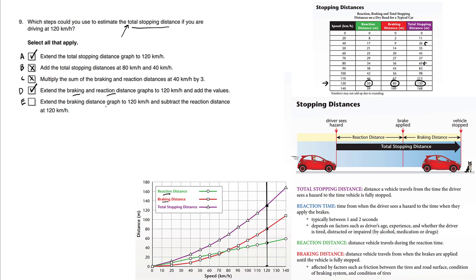Finally, extend the braking distance graph to 120 kilometers an hour and subtract the reaction distance at 120 kilometers an hour. Why would we take the red graph and subtract the green graph? That's the wrong formula. At 120 kilometers an hour, if we take this red graph, the braking distance, subtract the reaction distance graph minus 50, we get the answer 30, which is nothing close to 130, so this is also invalid.